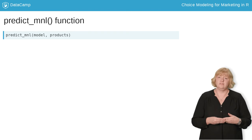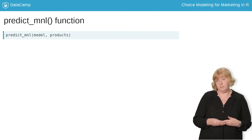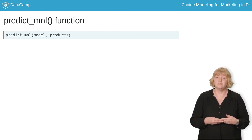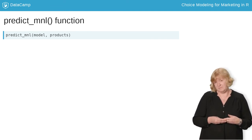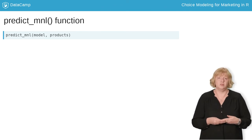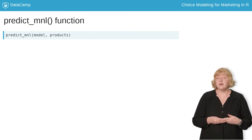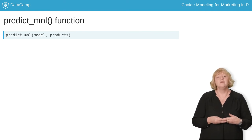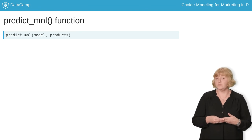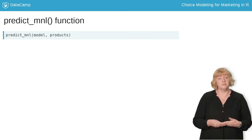You may have used the predict function to make predictions from a linear regression model before. There's a similar function for mlogit models, also called predict, but it has a few features I don't like, so I wrote my own function for prediction from a multinomial logit model — it's called predict MNL. The first input to predict MNL is the mlogit model object that we get when we call mlogit. The second input is a data frame that describes the new choice alternatives that you want to predict share for. You can think of this products data frame as describing the sports cars that are available in some hypothetical country somewhere.